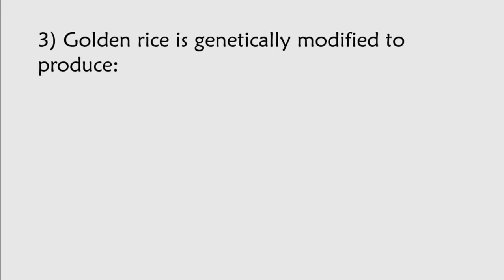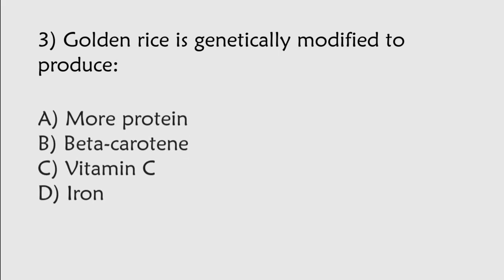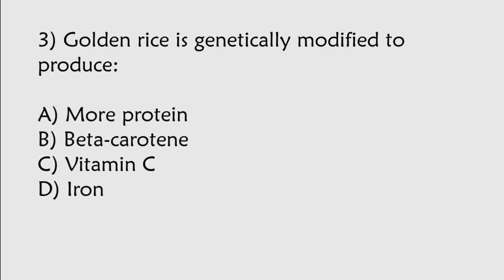Golden rice is genetically modified to produce Morphrutine, Beta-Carotene, Vitamin C, Iron. Correct answer is Option B, Beta-Carotene.